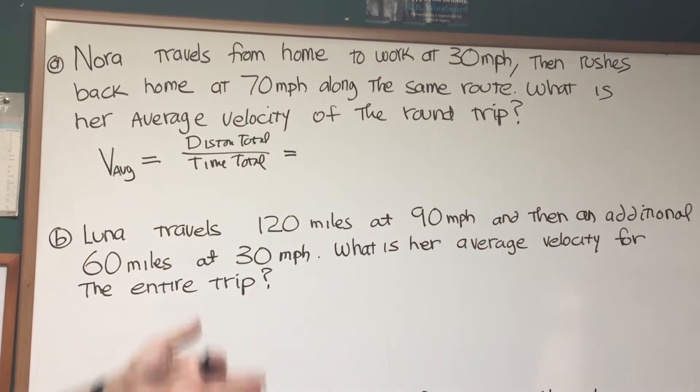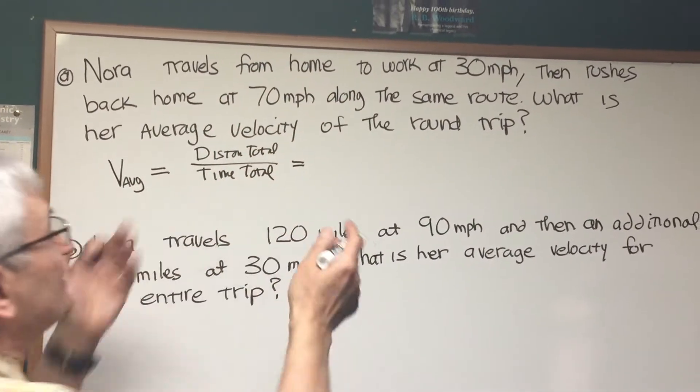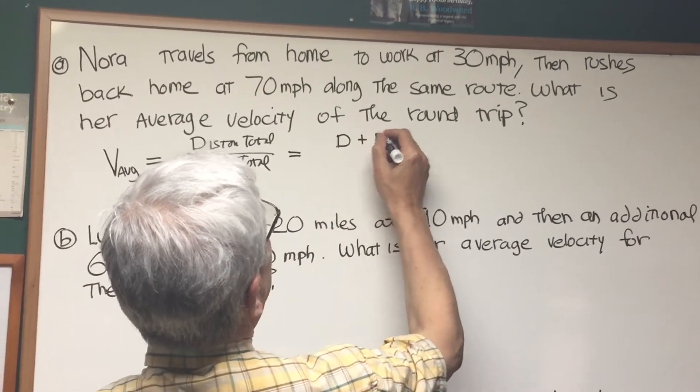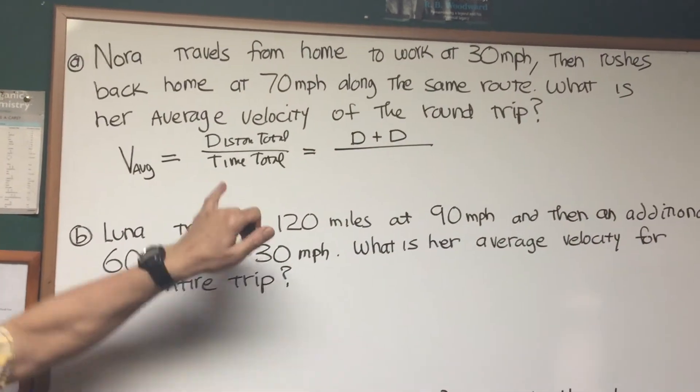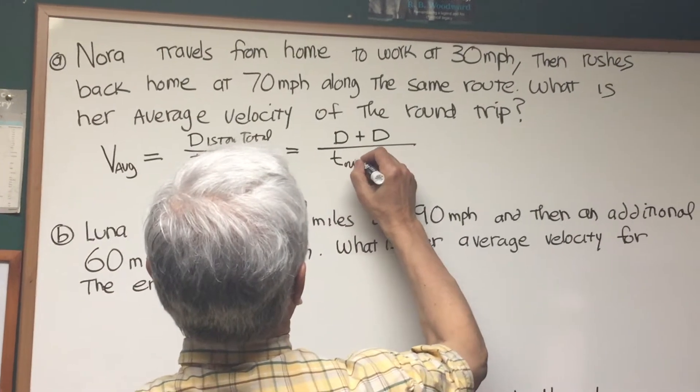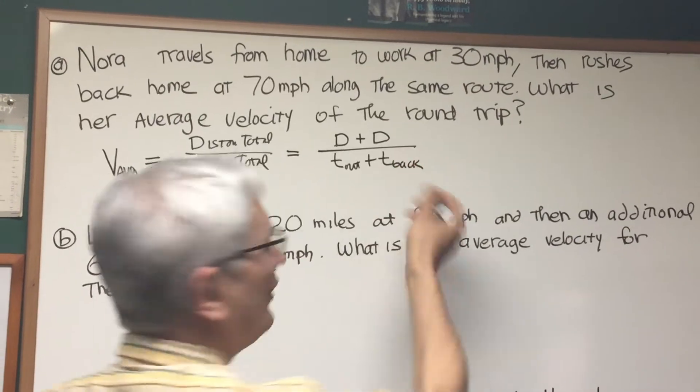We don't have distance here. How far is it from Nora's home to Nora's work? We don't know. Let's say it's D. But we know she travels to D two times, once from home to work, and again from work back to home. Now the total time, we're going to have time out and time back. Well, what are those values? We don't have those values either.